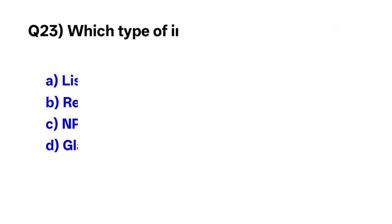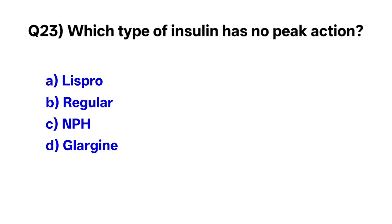Question number twenty-three: Which type of insulin has no peak action? The correct option is glargine.